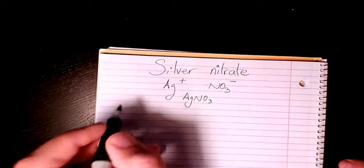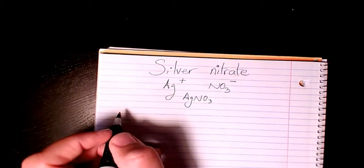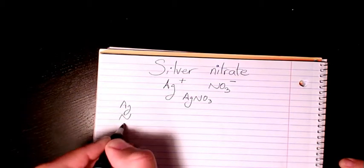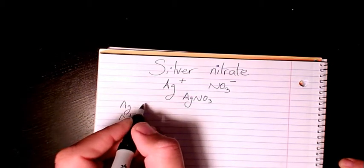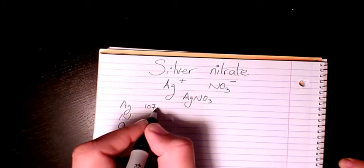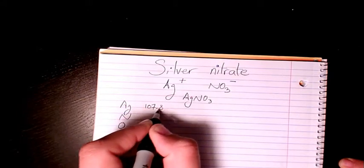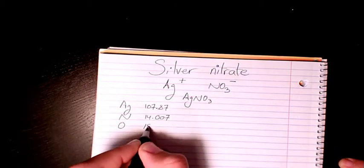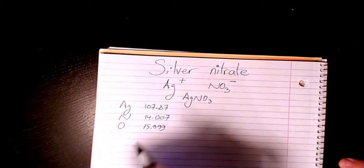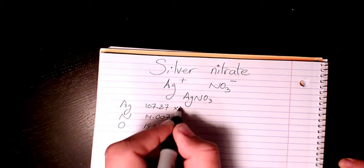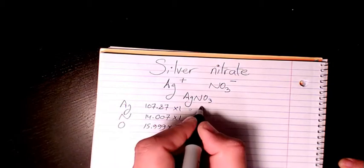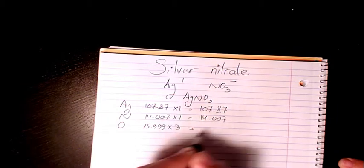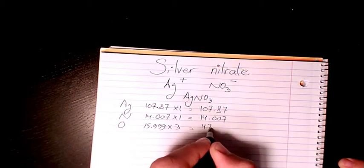That's the molecular formula. In order to find out the molar mass, we can list all the elements. Ag is 107.87, nitrogen is 14.007, and oxygen is 15.999. We have three oxygens and one nitrogen and one silver, which gives us 107.87, 14.007, and 47.997.